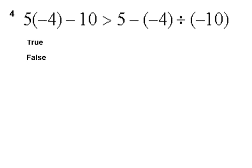Question four, five times negative four minus ten is a greater value than five take away negative four divided by negative ten.